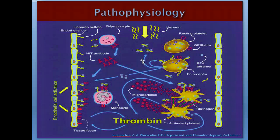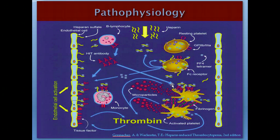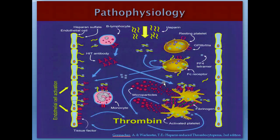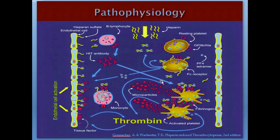The PF4-heparin complex gets attached to the platelet surface and is attacked by the HIT antibody. The FAB portion attaches to the complex forming the IgG-heparin-PF4 complex, and the FC portion attaches to the FC receptors on the platelet, causing these receptors to phosphorylate and initiate a signaling cascade leading to platelet activation, aggregation, and secretion of microparticles. These microparticles are phospholipids that facilitate coagulation and induce thrombin formation.